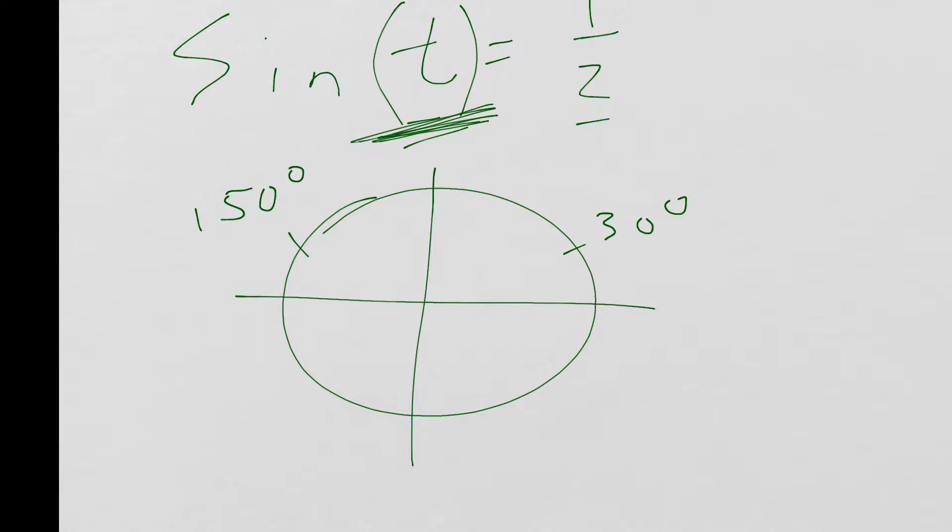So this is an angle, and I hope you can see that these are the only two possible times that Y, right? Our sine is our Y value. That Y can be 1 half.